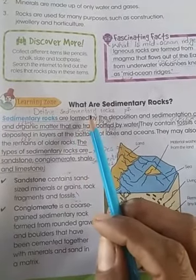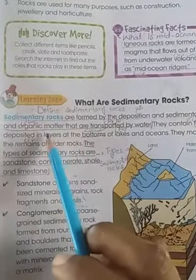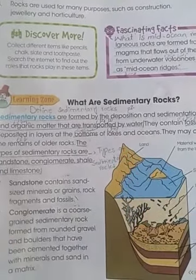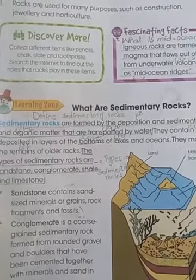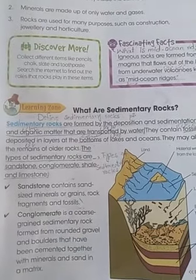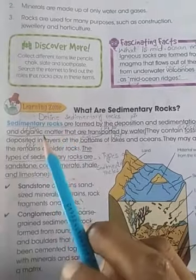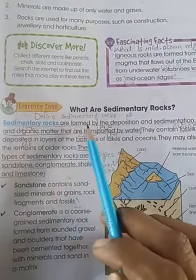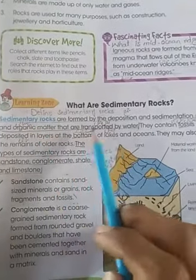What are sedimentary rocks? Sedimentary rocks are formed by the deposition and sedimentation of minerals and organic matter that are transported by water. When materials are transported by water and deposited in one place, they form sedimentary rocks.